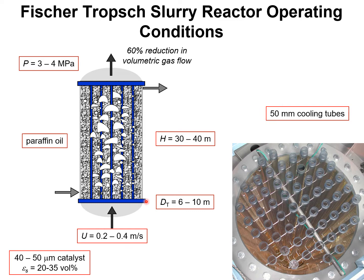The reactor dimensions are shown here approximately. The column diameters may range from 6 to 10 meters, and the column height could range from 30 to 40 meters. The bubble column slurry reactor for FT synthesis operates at pressures ranging from 30 to 40 bars.